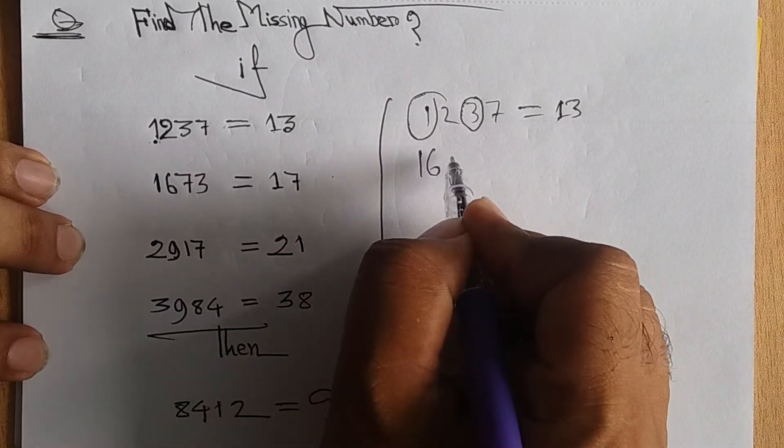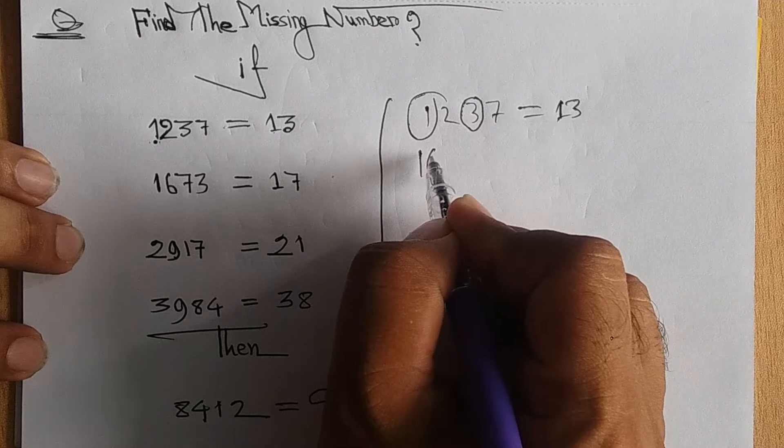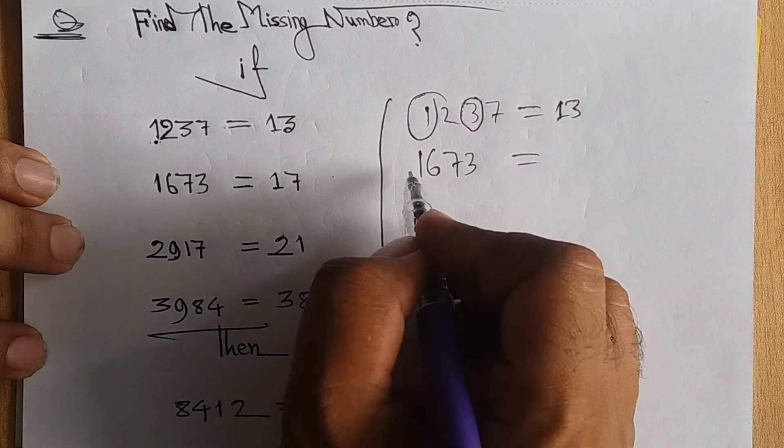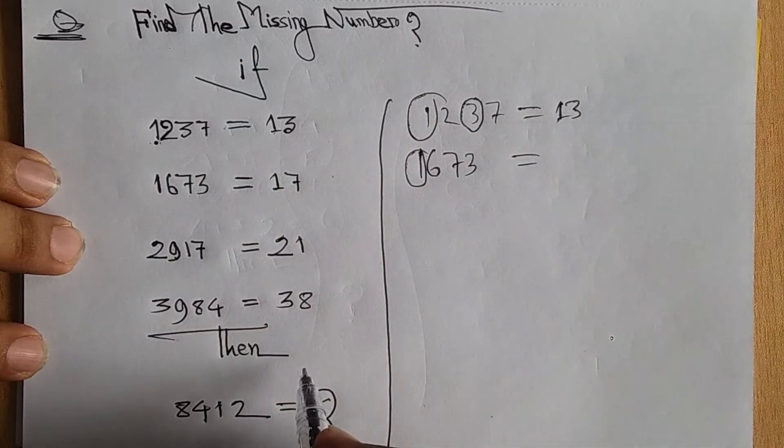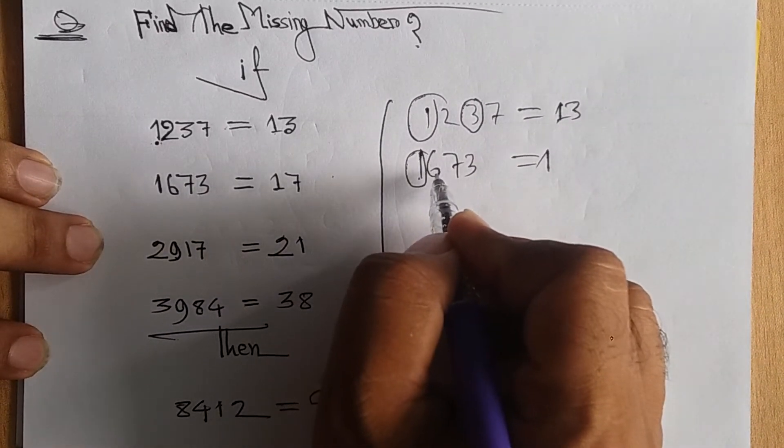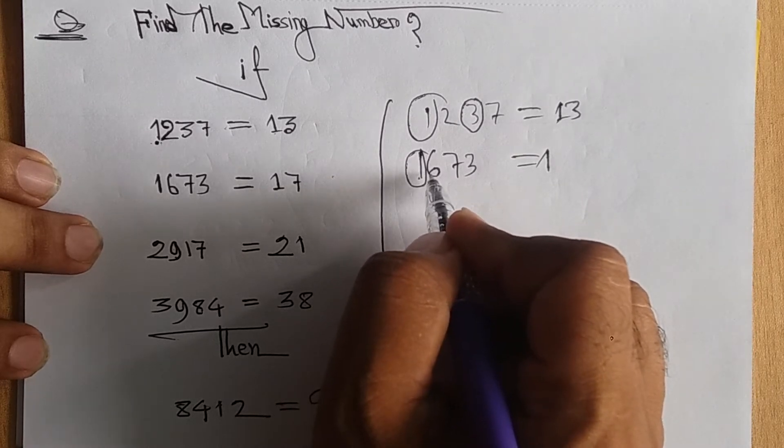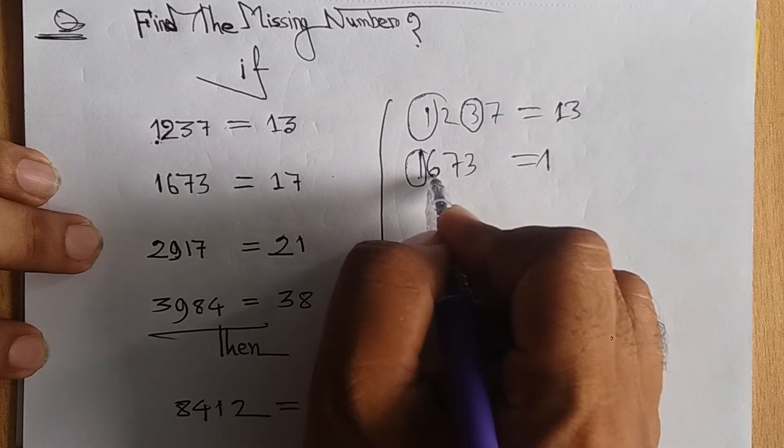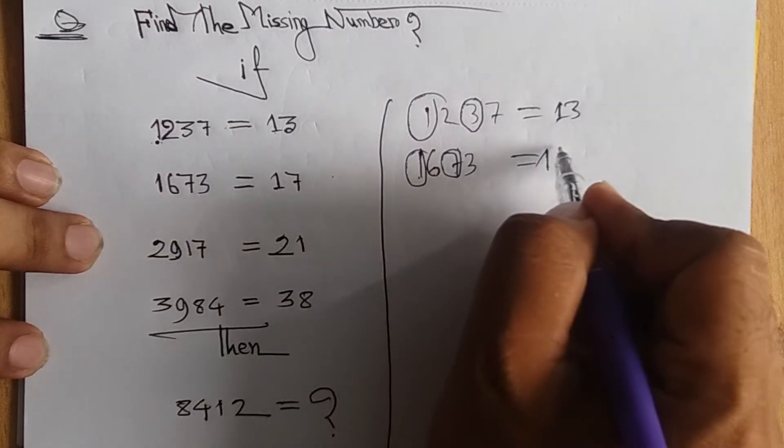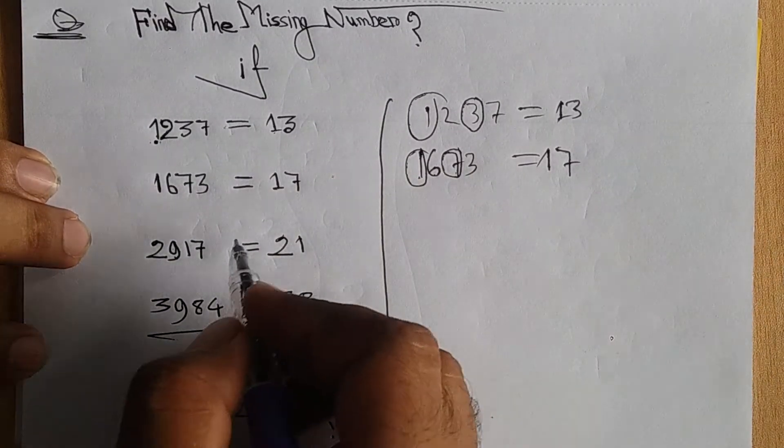The second one is 16 and 73. The sum of the digits - one plus six equals seven. This is the pattern for each number. When you add them together, you get the result.